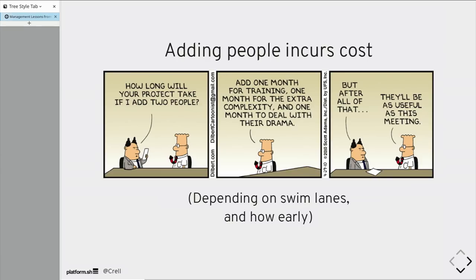A given project will have a natural number of swim lanes where more than this many people working on it are just going to produce git conflicts more than code. I will usually argue that the maximum number of developers on a project is number of swim lanes plus one. That's going to vary by project.